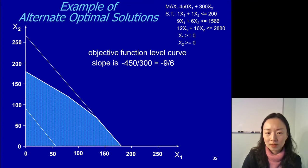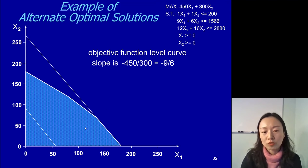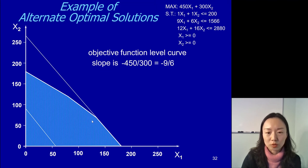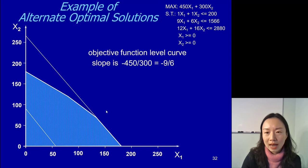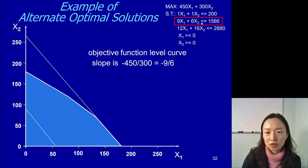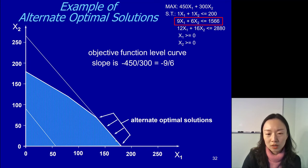Can you think about why? If we move it outwards further, it will go out of the feasible region. And if we move it inward, then it's not the optimal solution — the intercept on the x2 axis will be less. So if you look at the slope here, the level curve slope is negative 9 over 6, and it happens to be the same as this constraint's slope. Look at the slope of the second constraint — it's also negative 9 over 6. So the level curve slope is the same as the slope of the second constraint when we change it to a straight equation. That means when we push this level curve in this direction, all of those points on this overlapping part will be an optimal solution to our problem.